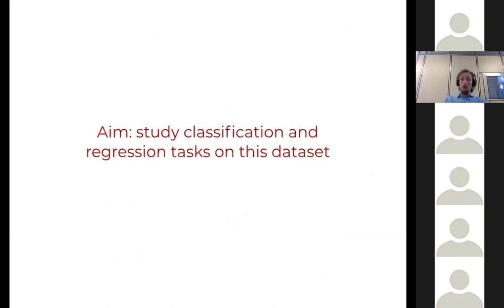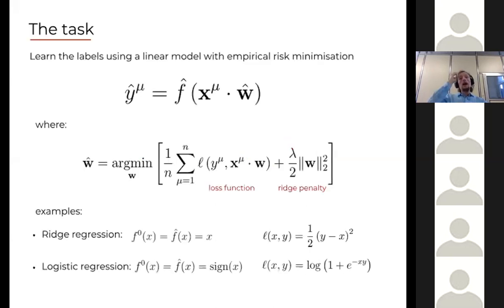What is the aim of this work is to study classification and regression on these hidden manifold data sets. Different from what Sebastian presented, which was online learning, here we are interested in the full batch problem. Both classification and regression can be put under the umbrella of generalized linear models. My predicted labels are a non-linearity applied to a weight dot my input vector. I fit my weights by minimizing a loss which can be quite general plus a regularization term, L2 penalty. By choosing my f_0 and f to be the identity, I get a regression task. If I choose to be a sign function, I get a classification task. By choosing the loss, I can choose different tasks. For example, the logistic loss gives logistic regression.